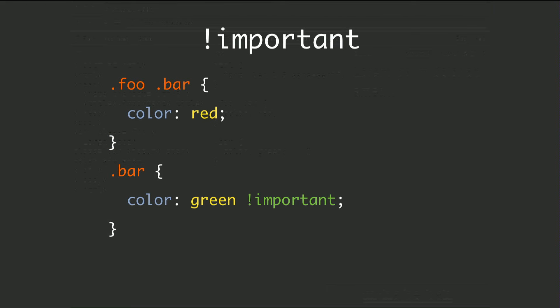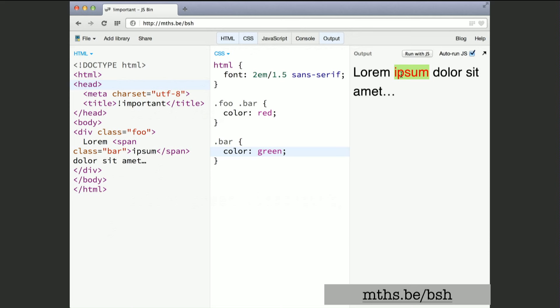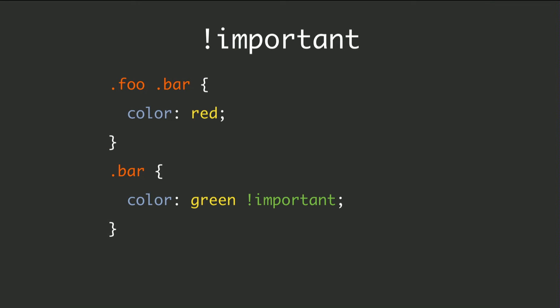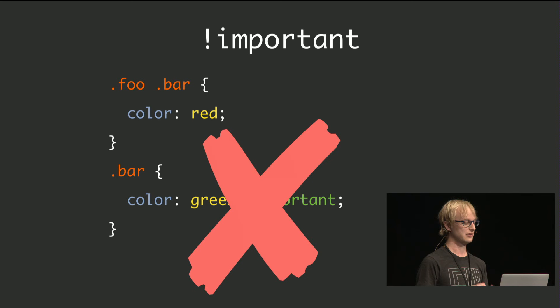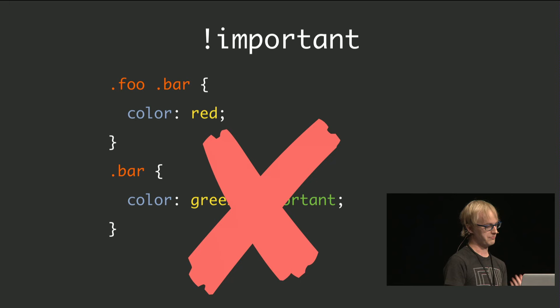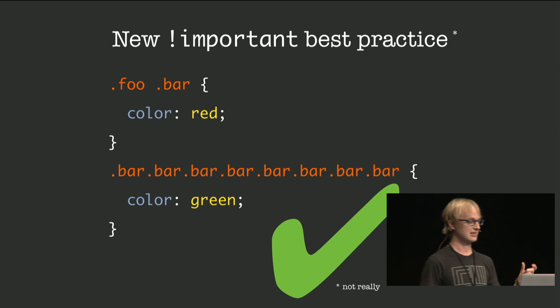In some situations you may need to override an earlier rule set. If you want all elements with class bar to be green despite the earlier rule, you can use !important to boost that single declaration's precedence. What surprised me is that !important has nothing to do with specificity — it's actually a completely different thing. It boosts a single declaration's precedence without affecting the specificity of the selector or the entire rule set. The use of !important is considered bad practice, but luckily we can fake it. Instead of boosting the declaration's precedence, we can increase the selector's specificity by repeating the class name in the last selector a couple of hundred times.